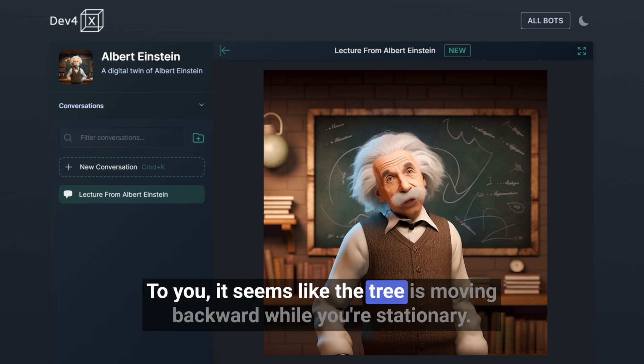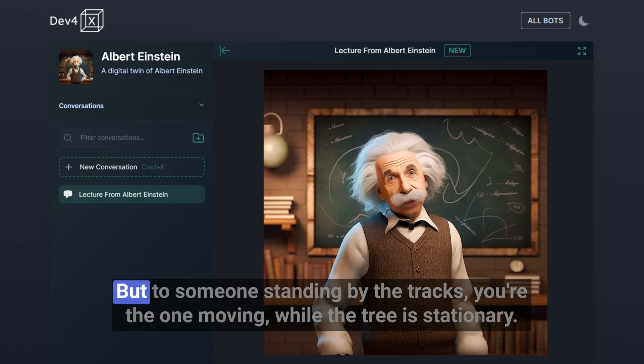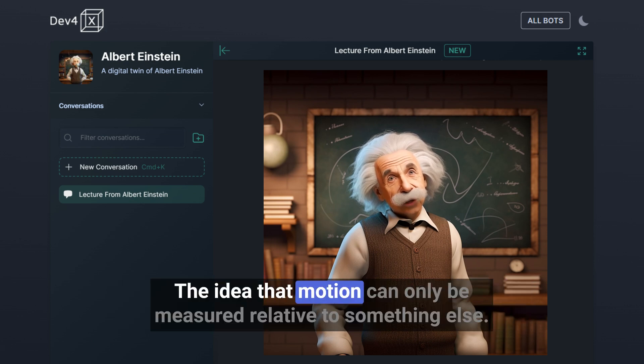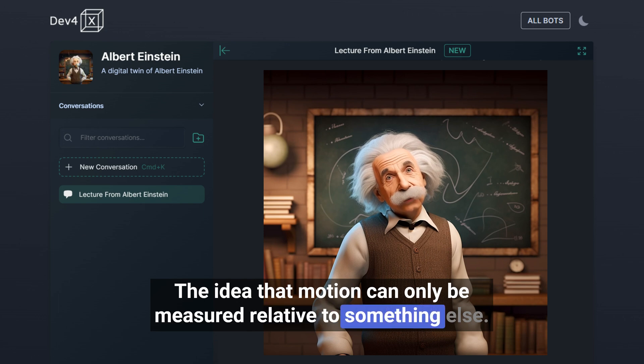To you, it seems like the tree is moving backward while you're stationary. But to someone standing by the tracks, you're the one moving while the tree is stationary. This is the essence of relativity - the idea that motion can only be measured relative to something else.